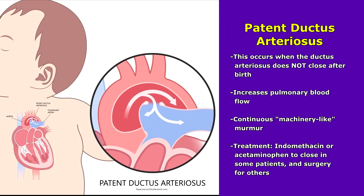Lastly is patent ductus arteriosus. This is where the ductus arteriosus, which is normally present in the fetal heart, does not close after birth, and this increases pulmonary blood flow. Due to this, you're going to hear a continuous machinery-like murmur. Treatment includes indomethacin to close it in some patients, but if that doesn't work, surgery can be performed.